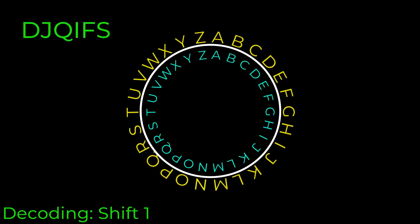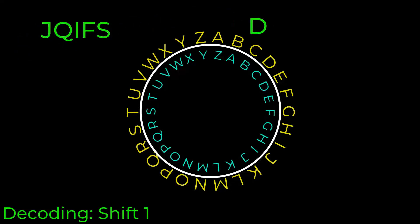Now if we want to decode our message, we're going to do the same process in reverse, so we're going to turn our inner dial the other direction by one. Remember that's our shift. D becomes a C, J becomes an I, Q becomes a P, I becomes an H, F becomes an E, and S becomes an R. Wouldn't you know it, cipher. We got our old message out.